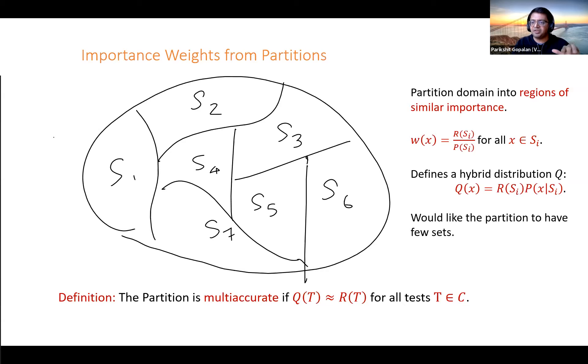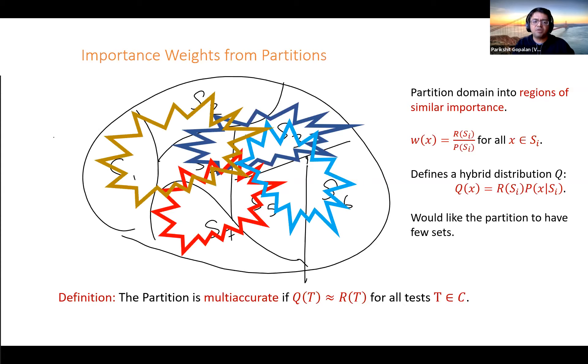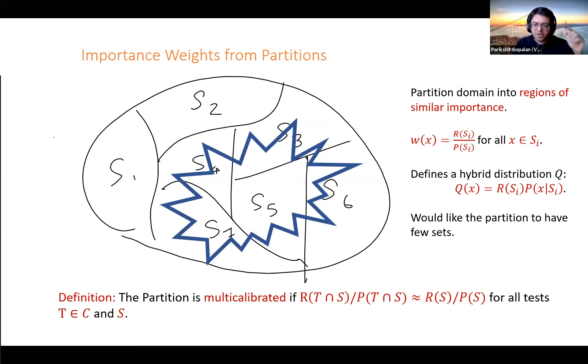This notion we call multi-accuracy. A much stronger notion - just for a picture, here is a set, and we're hoping that the weight it gets is the same under Q as under R. We want this property not just for a single set, but for every set in the collection. That's where the power comes from.